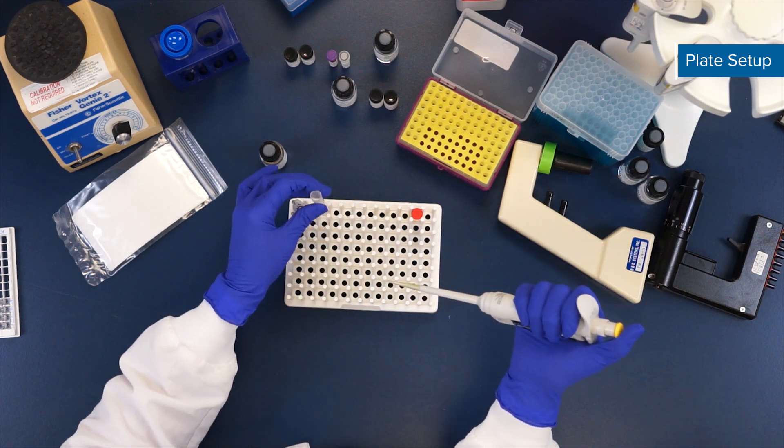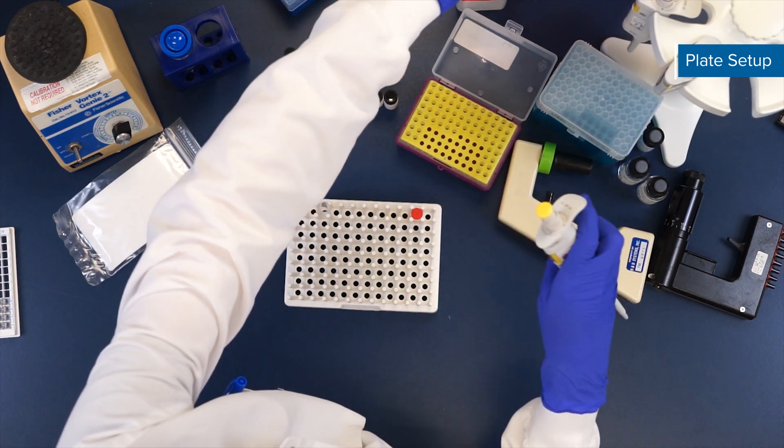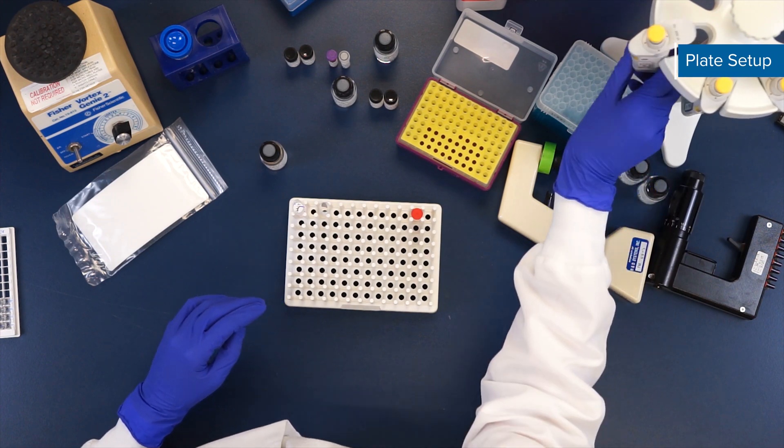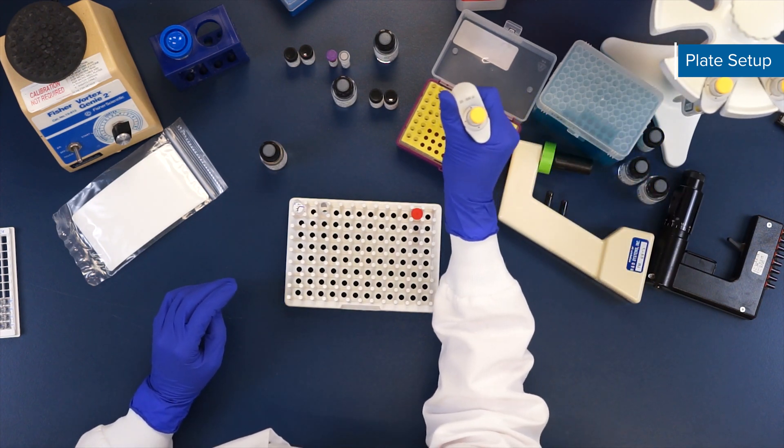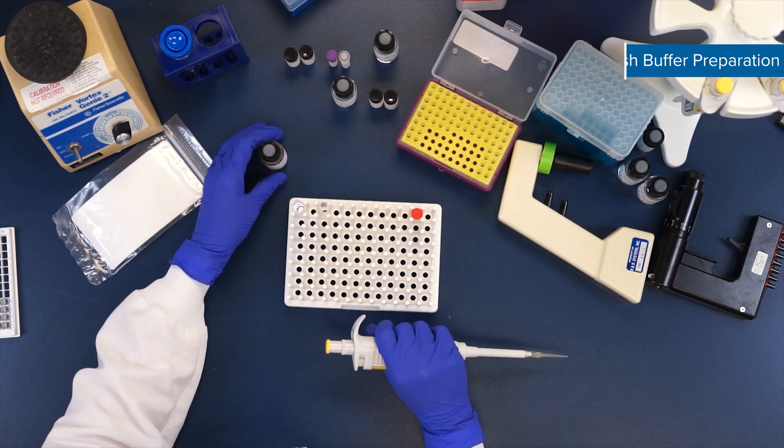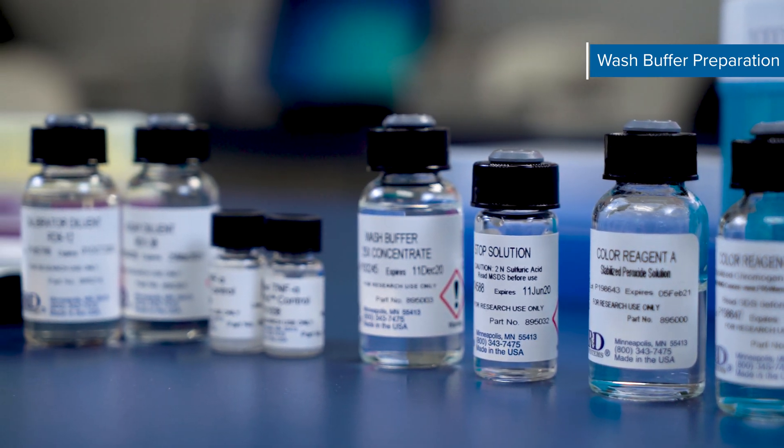Many cytokines, such as TNF-alpha shown in this video, are expressed at a very low abundance in serum and plasma from healthy individuals, and will likely fall below the standard curve. To prepare reagents, first bring all kit reagents to room temperature.